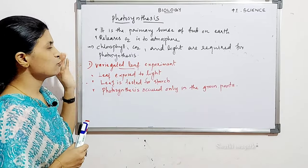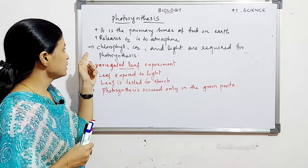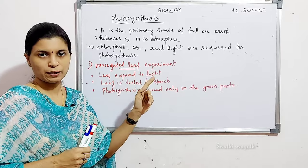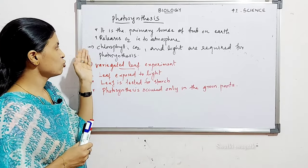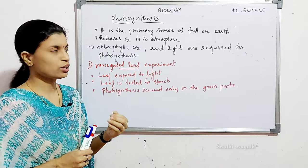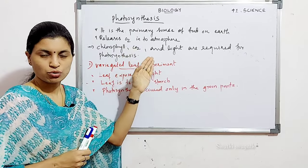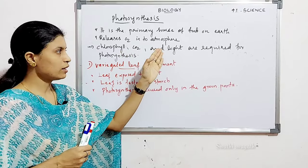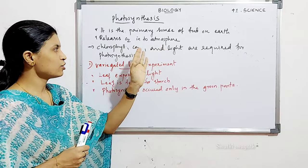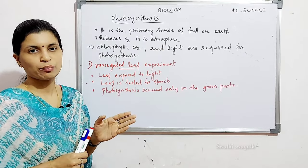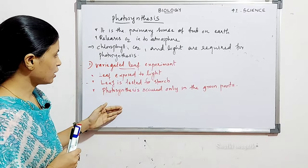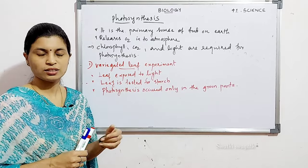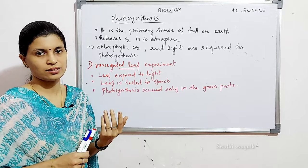What are the requirements for photosynthesis? The first one is chlorophyll — it gives green color to plants. Chlorophyll is a green pigment present in plants and it helps to trap light energy. Carbon dioxide is also another important factor for performing photosynthesis. Light is required, and water is also an essential requirement. The following are some experiments to prove the necessity of each element — whether chlorophyll, CO2, or light is necessary.